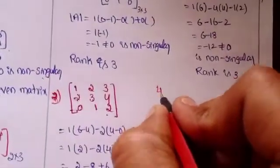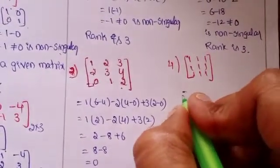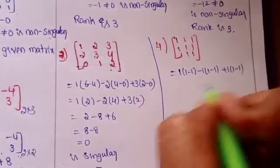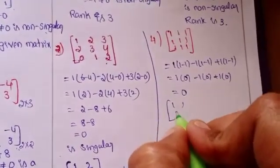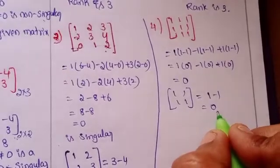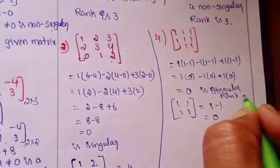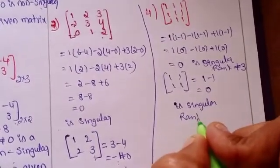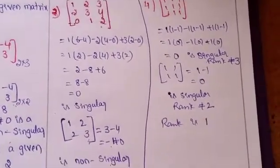For the fourth problem, the matrix consists entirely of 1s. The determinant equals 0, so it is singular. Taking a 2x2 sub-matrix also gives determinant 1 minus 1 = 0, which is also singular. Since rank is not equal to 2 or 3, the rank is 1.